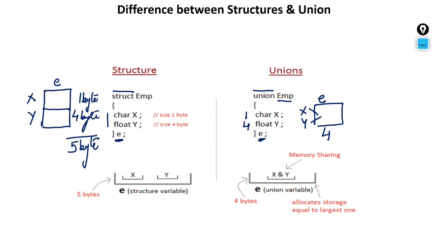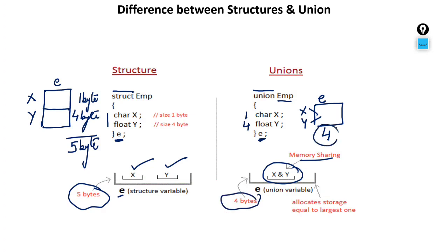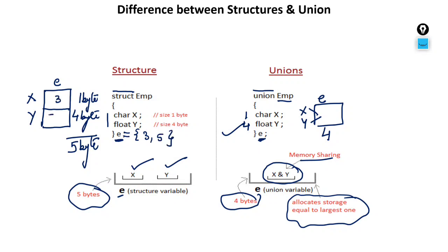Both x and y share this memory space in a union. When you create a structure variable, two separate partitions exist — one for x, one for y — totaling five bytes. But for a union variable, only a single memory space is used by x and y; memory sharing takes place and the size is four bytes, allocated equal to the largest member. Now the second important difference: you can initialize a structure variable, but you cannot initialize a union variable. If you write {3, 5} for a structure, 3 goes to x and 5 goes to y.